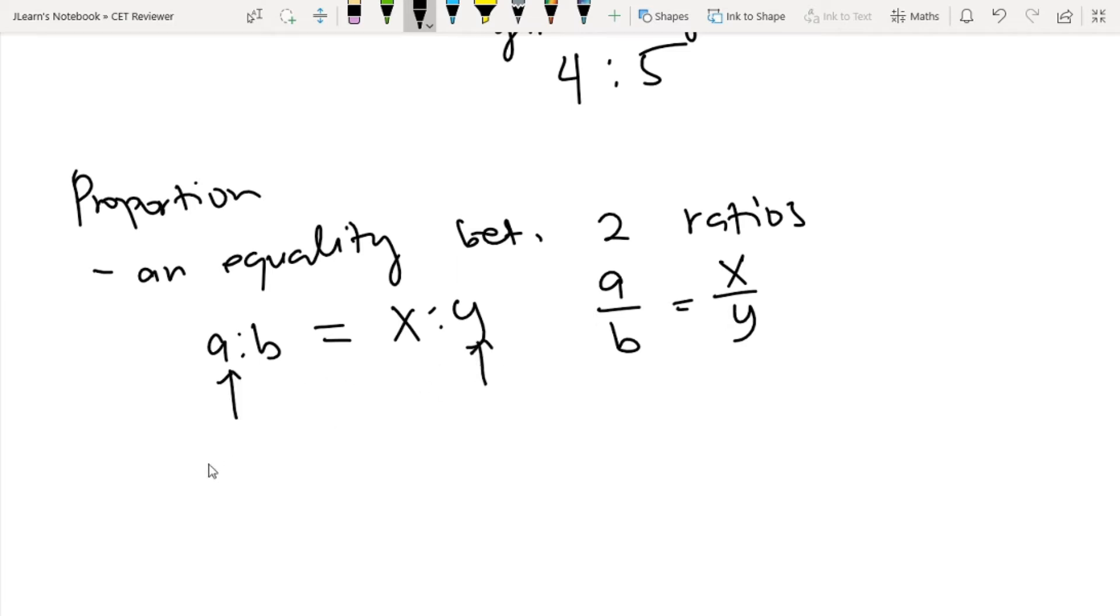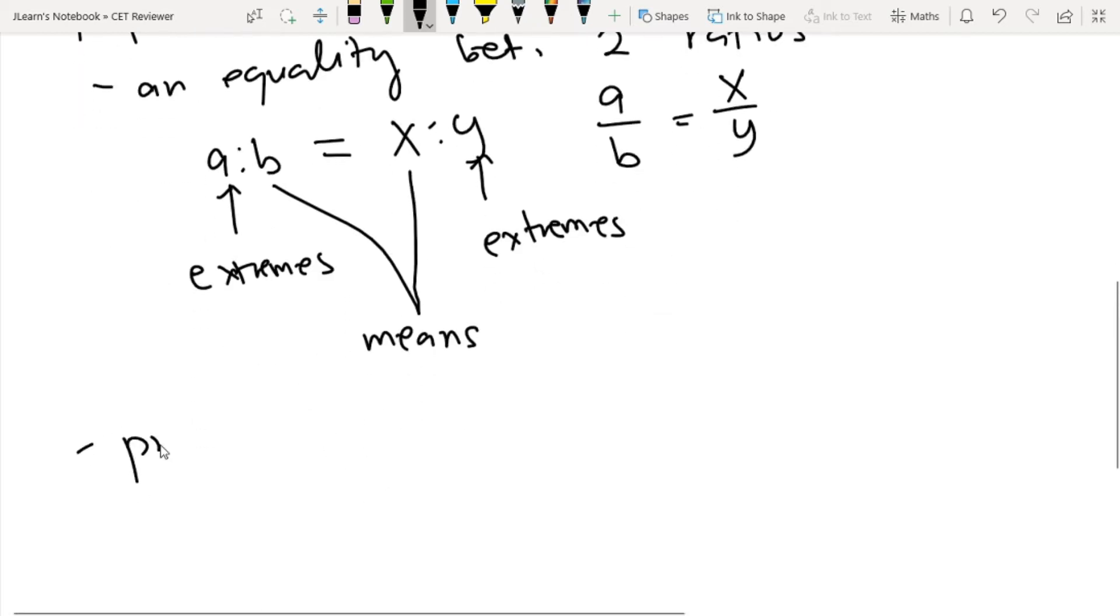The a and y are called extremes, and b and x are called means. We have a rule here: the product of the means is equal to the product of the extremes.